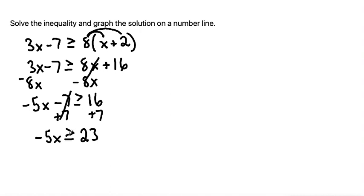And now here is where we have a step that's a little bit different than when you have just an equation with an equal sign. We want to divide both sides by negative 5. The rule is that if you have an inequality and you're dividing both sides by a negative number, you want to flip that inequality.